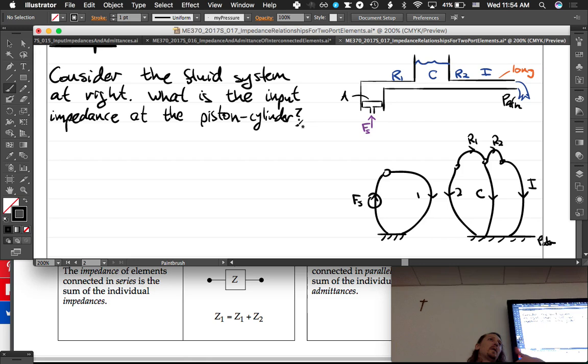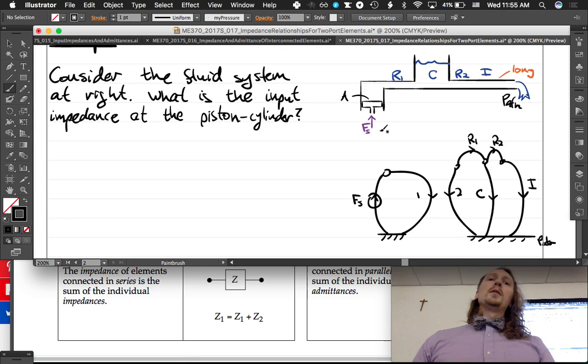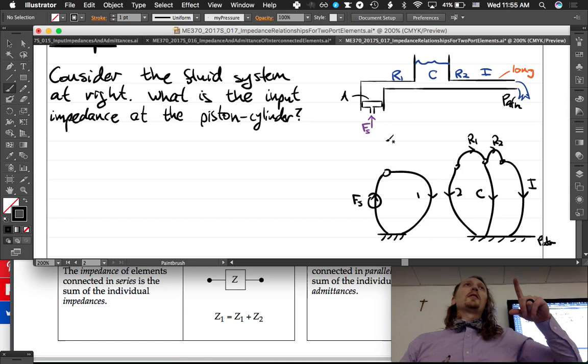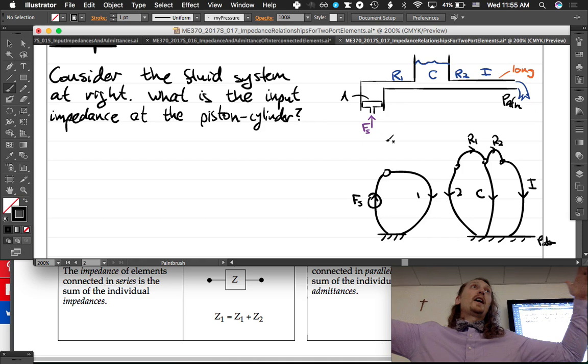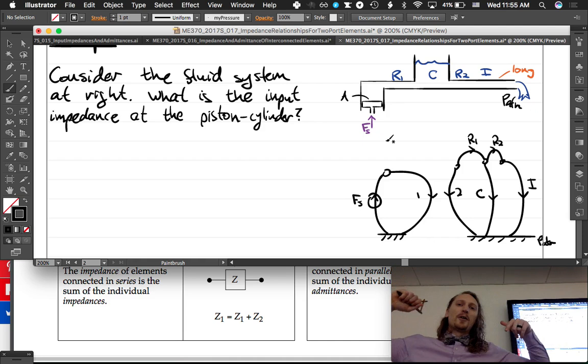So if you were to look up in the table in the book, we would know that we have a gyrator here. But really we know that it's a gyrator because we're going to go from a through variable here—it's going to be related directly to an across variable. So what is the relationship of a piston-cylinder? If you put in a force on the piston, how does that turn—what does that turn into? How is it related to what happens in the fluid?